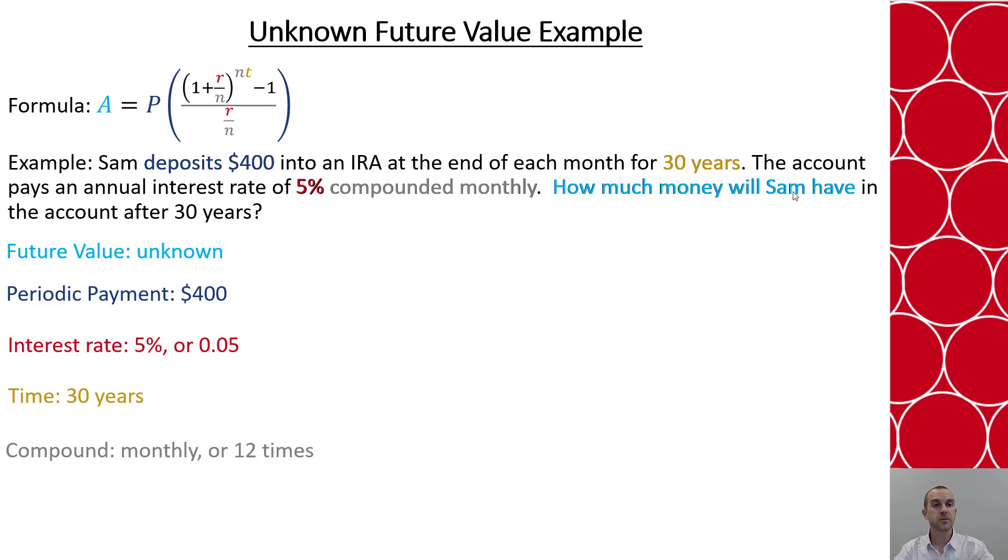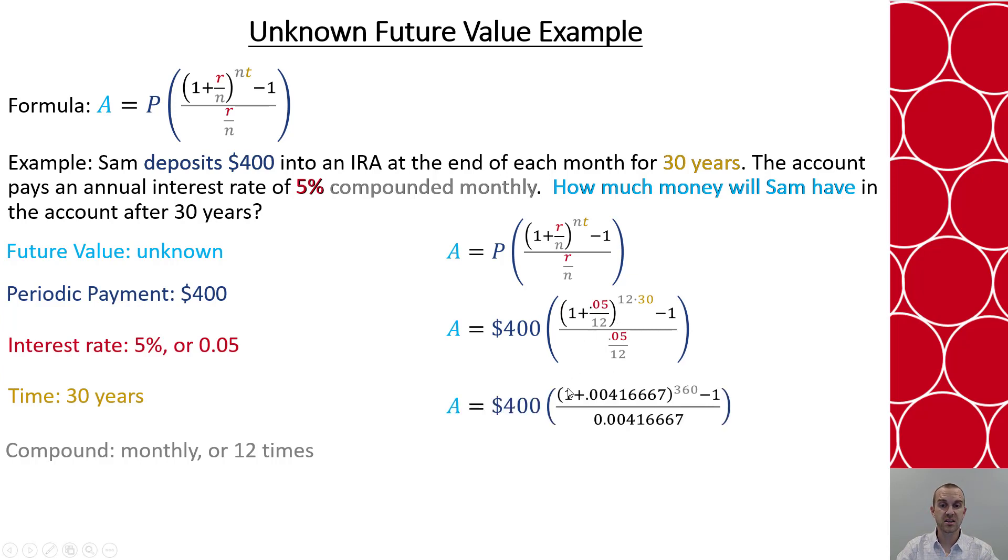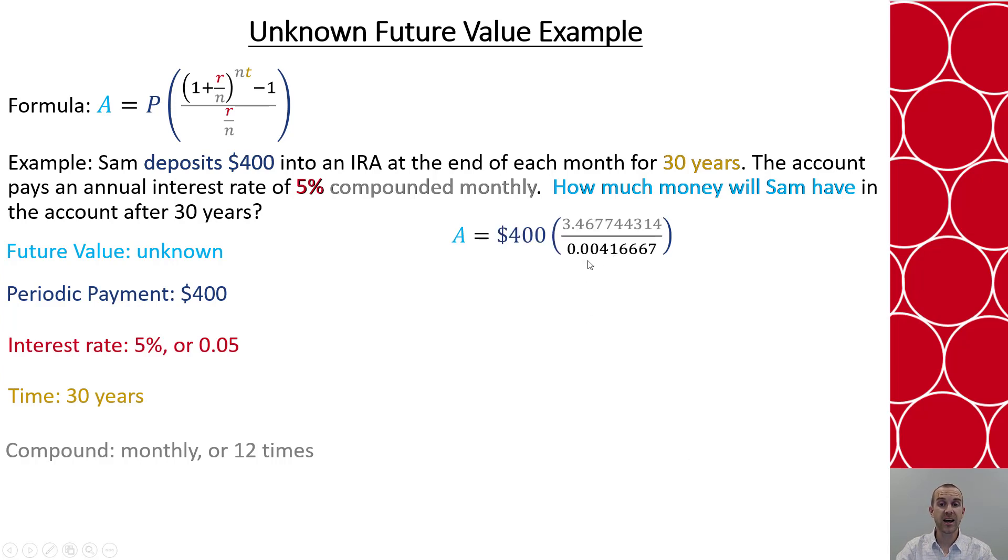So let's place the information we have into the formula. So now we have in our numerator 1 plus 5 hundredths divided by 12, all raised to the 12 times 30 minus 1, all that divided by 5 hundredths divided by 12. So we're going to simplify each of our fractions here, and then we can sum our two values and then we're going to raise that to the 360th power. Next we subtract 1 and then we divide by our denominator.